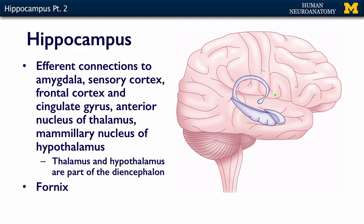An important outflow from the hippocampus is the fornix — this big fiber tract pictured here. The fornix connects the hippocampal formation as a whole to the mammillary nucleus of the hypothalamus.